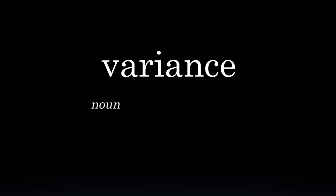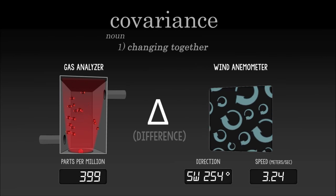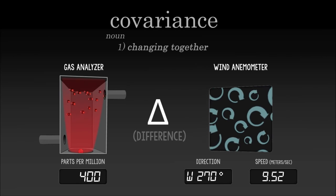Covariance has two parts, co meaning together, and variance meaning change. This means simultaneously measuring the differences between the concentration of a gas and the direction of the swirling wind.